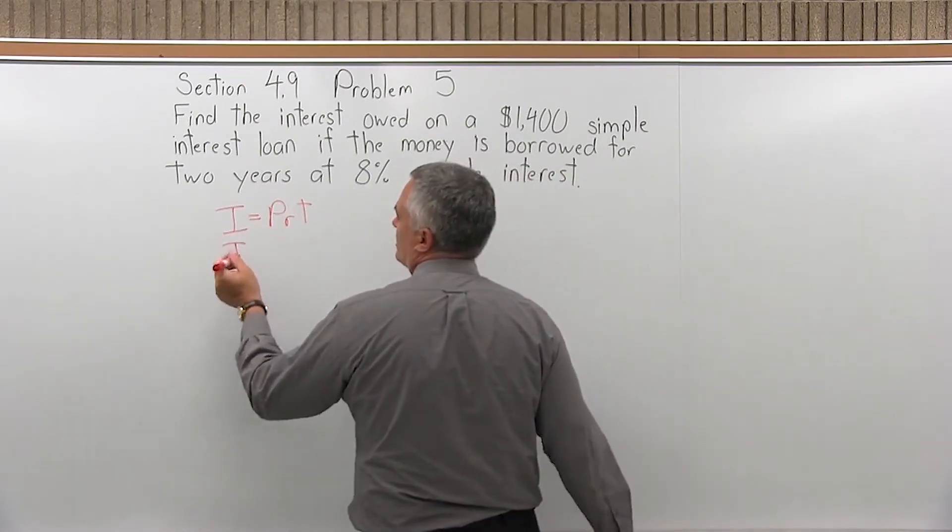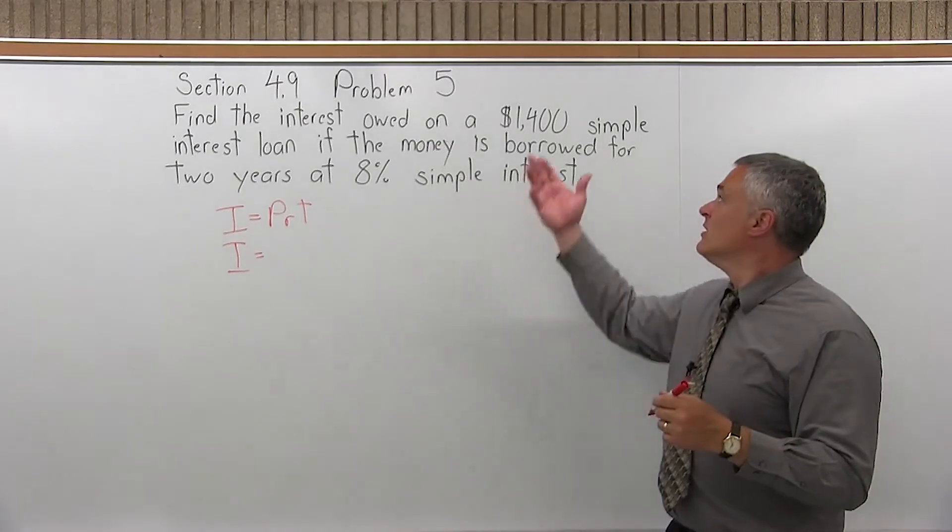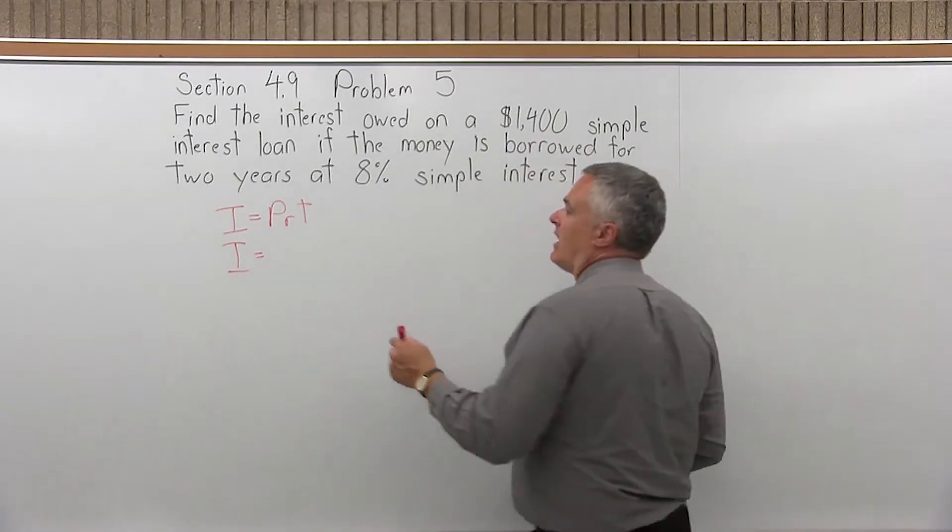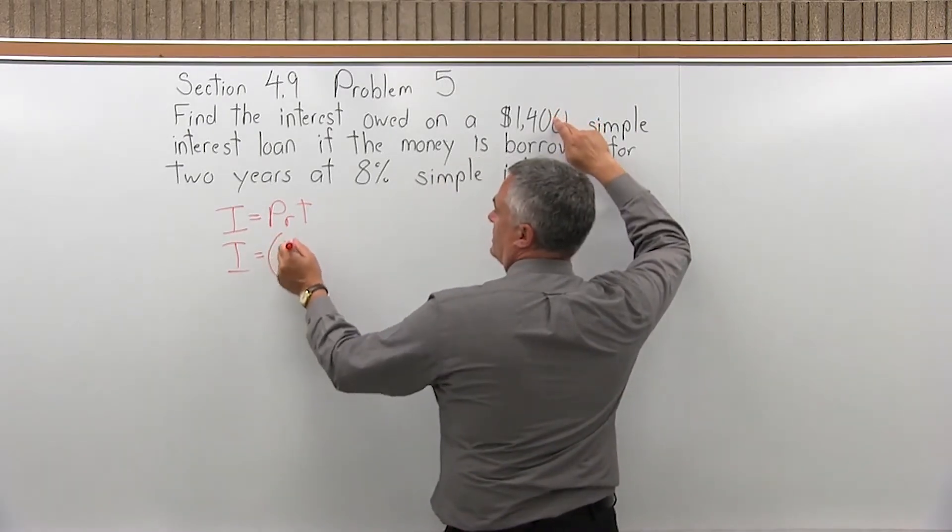I is the interest usually earned from the lender's point of view. This is an investment. They're going to get their $1,400 back plus some interest. P is the principal or initial amount. So for this problem, it's $1,400.